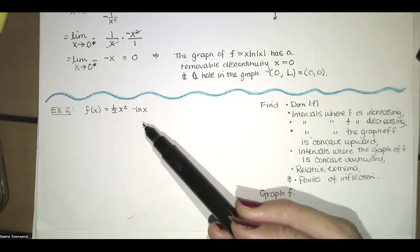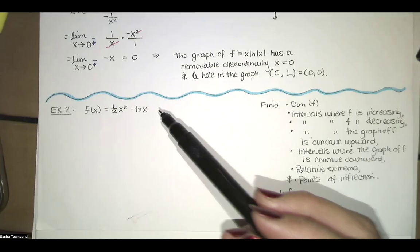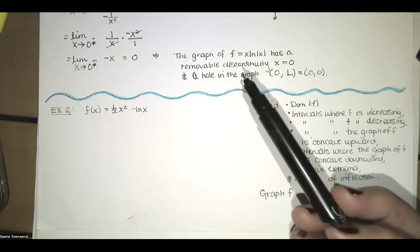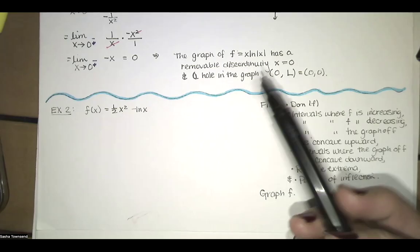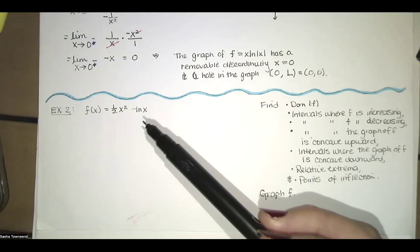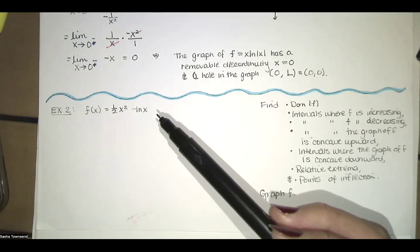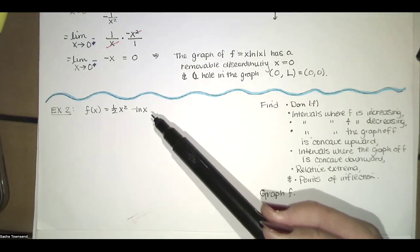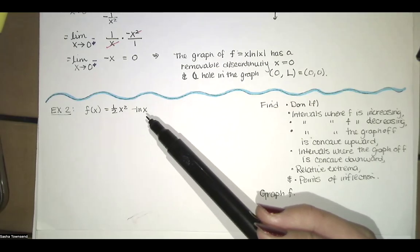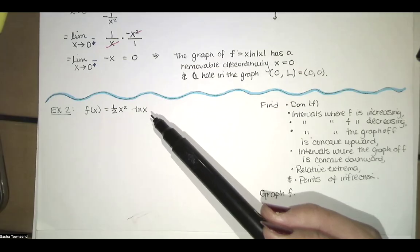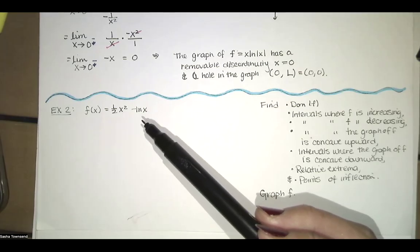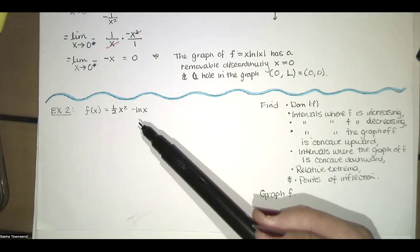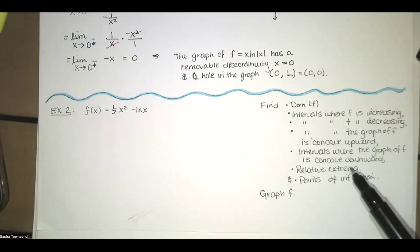In this video, we look at a new function, but we do pretty much the same thing that we did last time. We want to know a lot of things about this graph of f: the domain of the function, where the function is increasing and decreasing, where the graph is concave upward and concave downward, and we want to use a first and second derivative test to infer relative extrema.